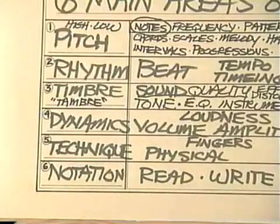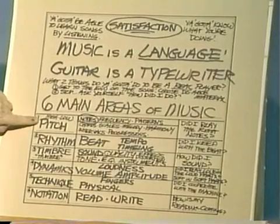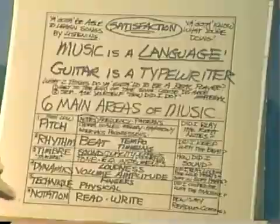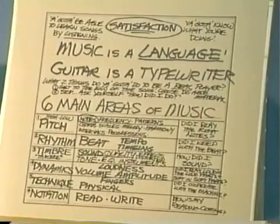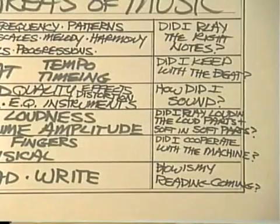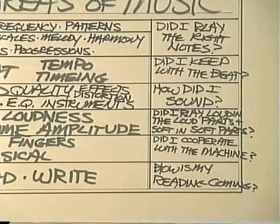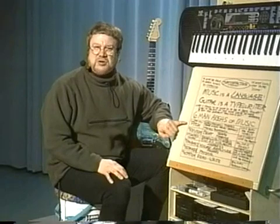In your very first lesson we learned that music is a language and it has six parts of speech. These are the six main areas of music: pitch, rhythm, timbre, dynamics, technique, and notation. To be a real player you've got to make sure you can answer yes to those six different questions. A lot of people are only fooling themselves into believing they're playing music. You can look back at tape number one and memorize all that stuff — we've got too much to talk about today. I just wanted to remind you that the largest body of information you have to learn about in music is pitch.